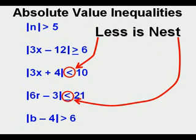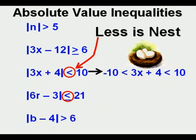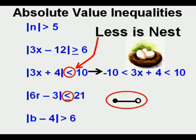And less is nest will apply to two lesses. And here is what it changes to. We make the positive number on the right negative, negative 10, make the less than sign, place the expression 3x plus 4 in the middle and make that less than the positive number, which in this case is 10. We will call it nest because the expression nests in the middle and doesn't have the arrows pointing outward. And on a number line, it is a filled in line segment between two boundary points.